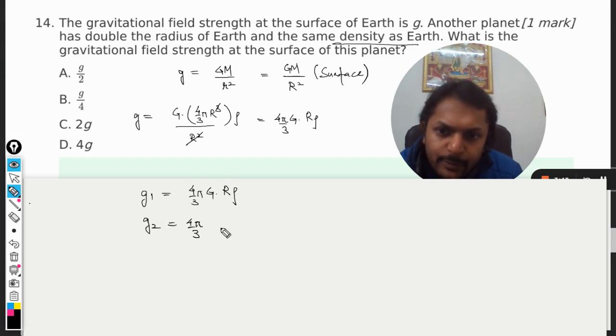So obviously this is now twice of this - two has been taken out and everything is replaced here. So this becomes twice of g1.